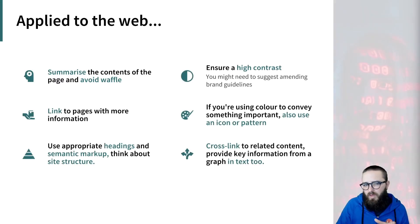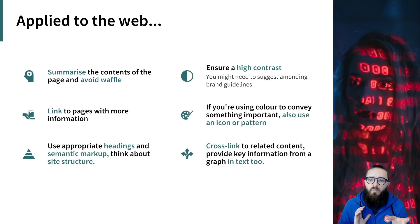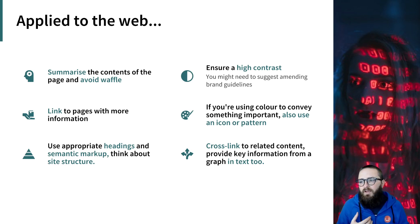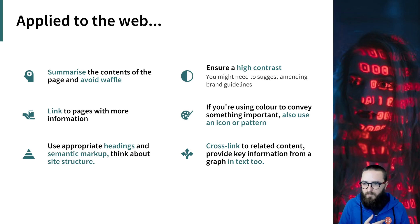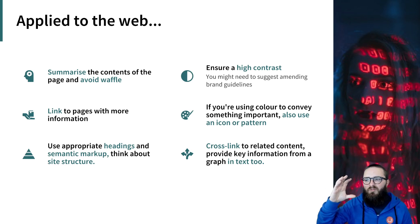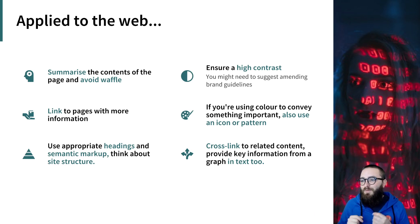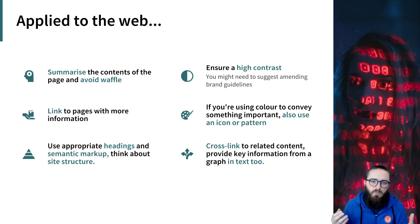Applying that to the web: avoiding information overload — although there's a lot of information in the detailed maps we looked at today, they don't distract from the basic information. On the web, we should be careful to only include the information people need. We don't want to be waffling, and we don't need information the user is unlikely to want or need. We can summarise the content of a page early on to save users scrolling through all the detail if they don't need to be on that page at all. We also want to provide more information to those who want it — simplifying information doesn't mean we need to trivialise it. People who need more information: provide that in-depth information further down in an article, or by linking to other pages which go into more detail on that specific subject.